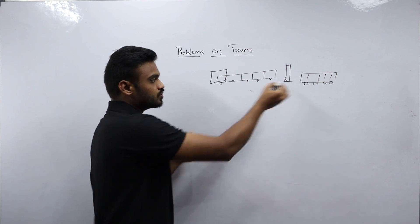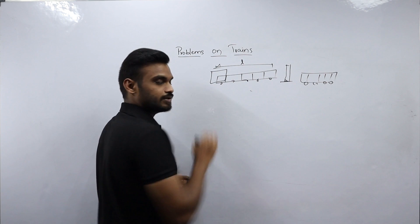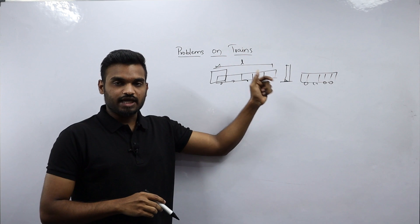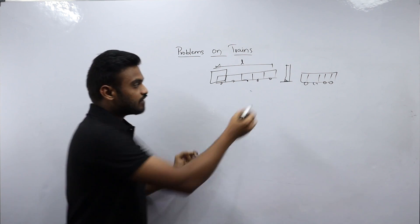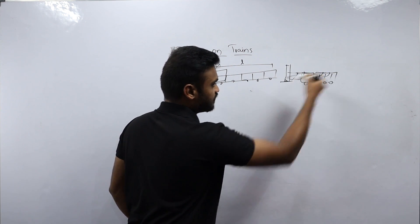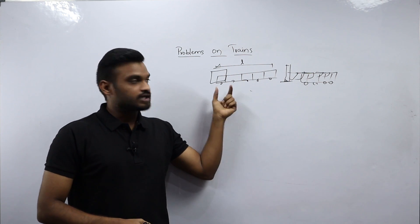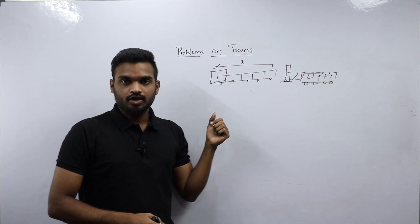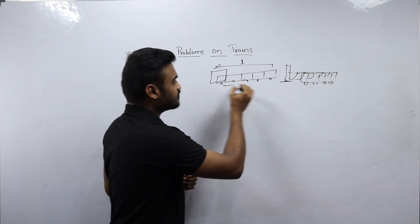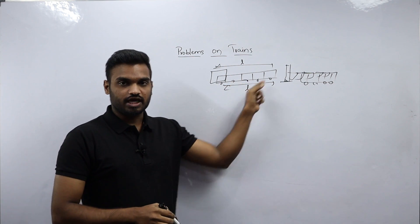For all bogeys to be outside the pole, the train needs to travel a distance equal to the total length of the train. That is, the train crosses the first bogey, second bogey, third bogey, fourth, fifth — and when all bogeys are outside the pole, we say the train has completely crossed the pole.